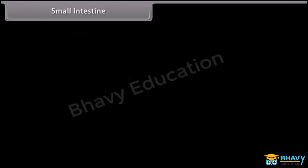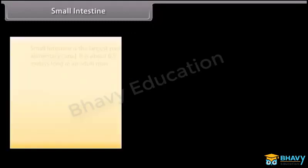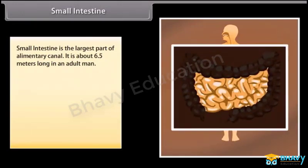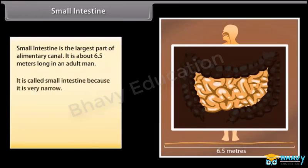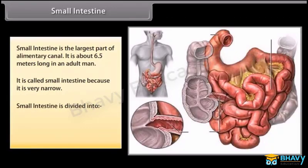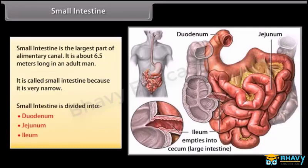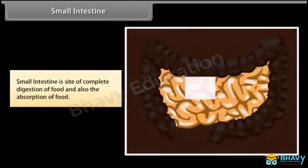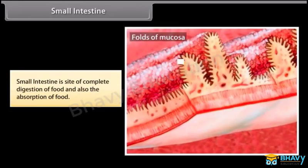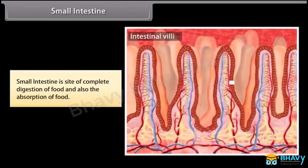Small intestine is the largest part of the alimentary canal. It is about 6.5 meters long in an adult man. It is called small intestine because it is very narrow. Small intestine is divided into duodenum, jejunum, and ileum. Small intestine is the site of complete digestion of food and also the absorption of food.